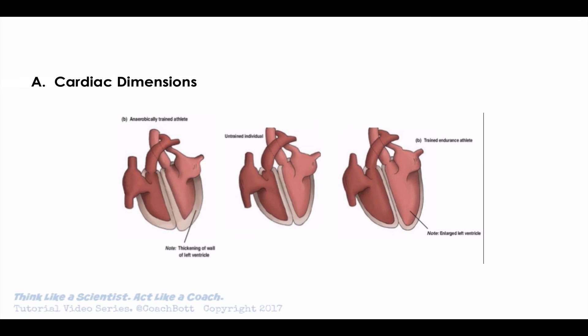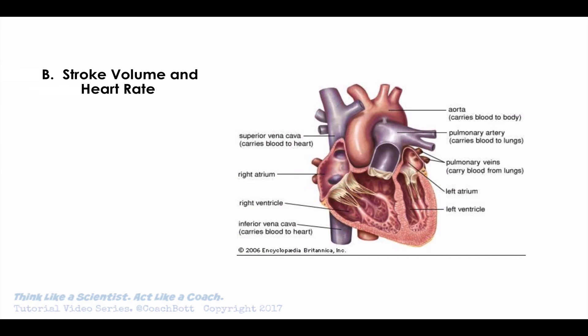Next is stroke volume and heart rate. Heart rate is how many times the heart beats per minute, and stroke volume is the amount of blood pumped out every time the heart beats — a huge adaptation in endurance training. With resistance training, we don't know much about whether stroke volume improves, but we do know that resting heart rate goes down slightly, and heart rate at submaximal levels decreases for the same resistance exercise.